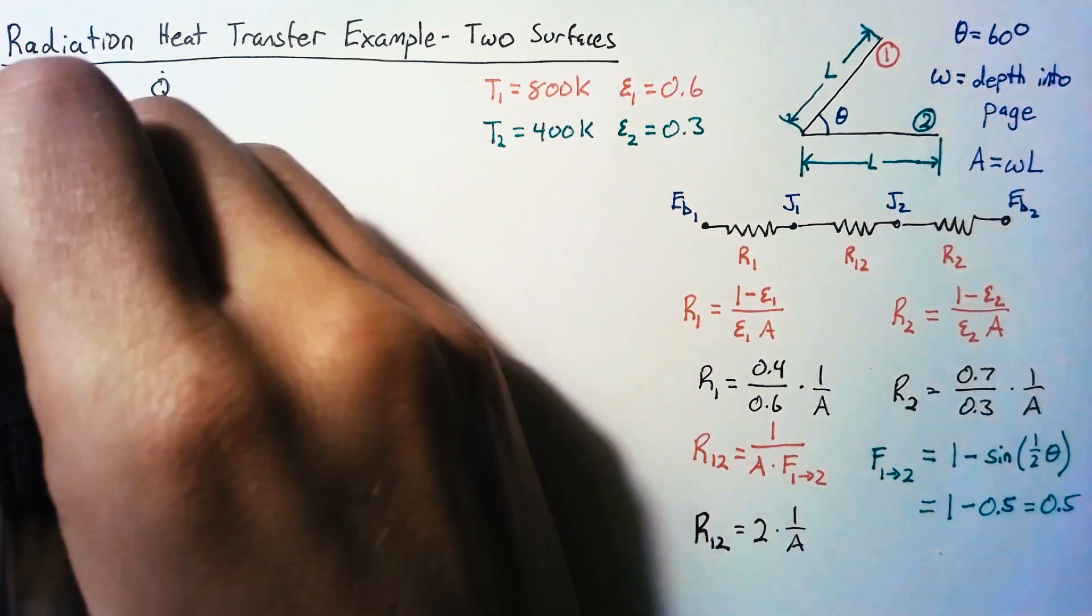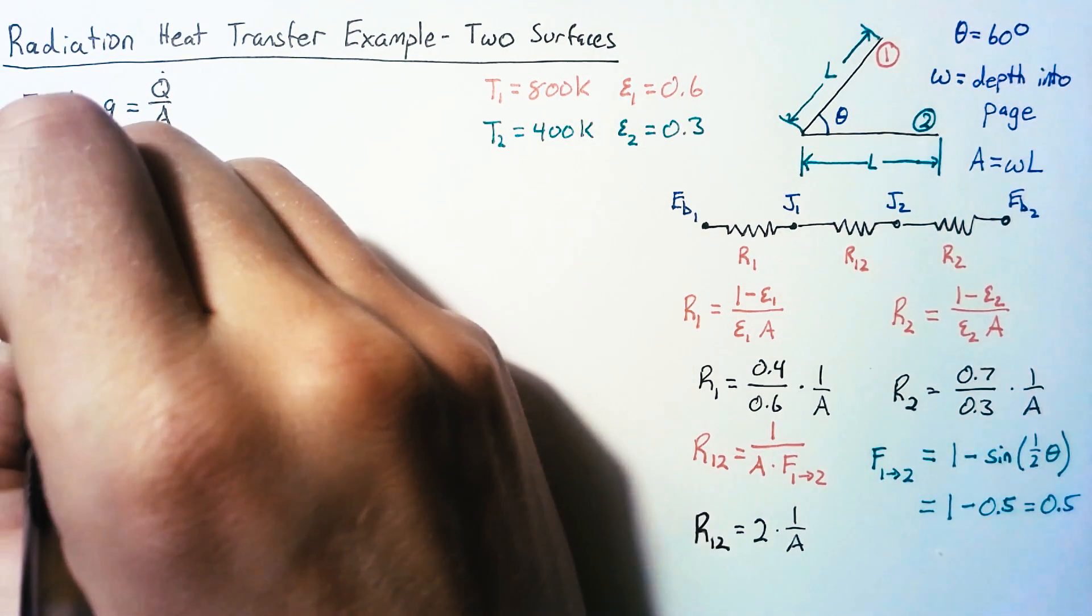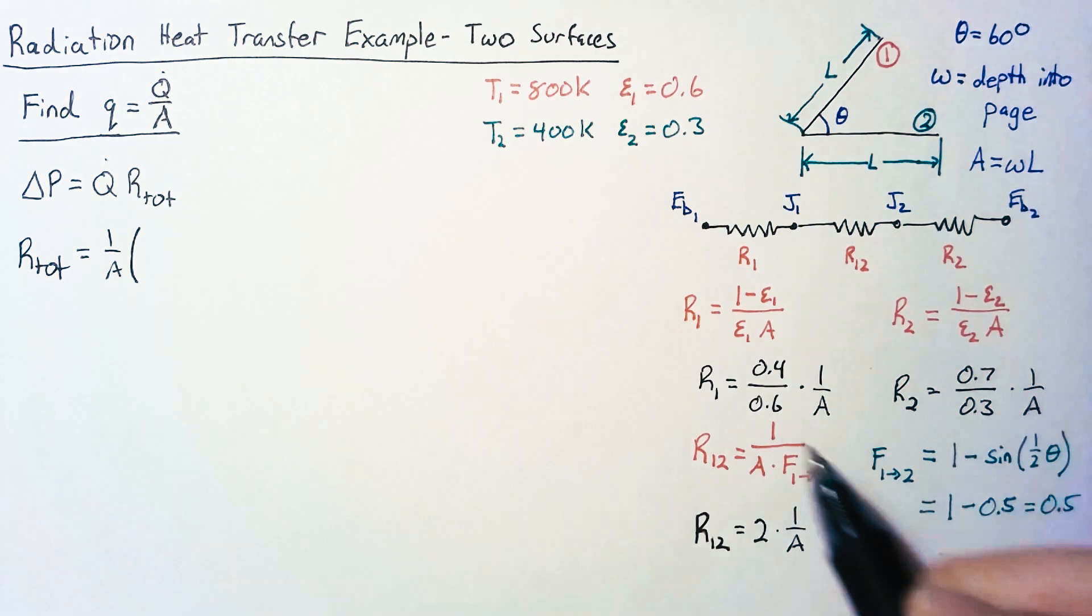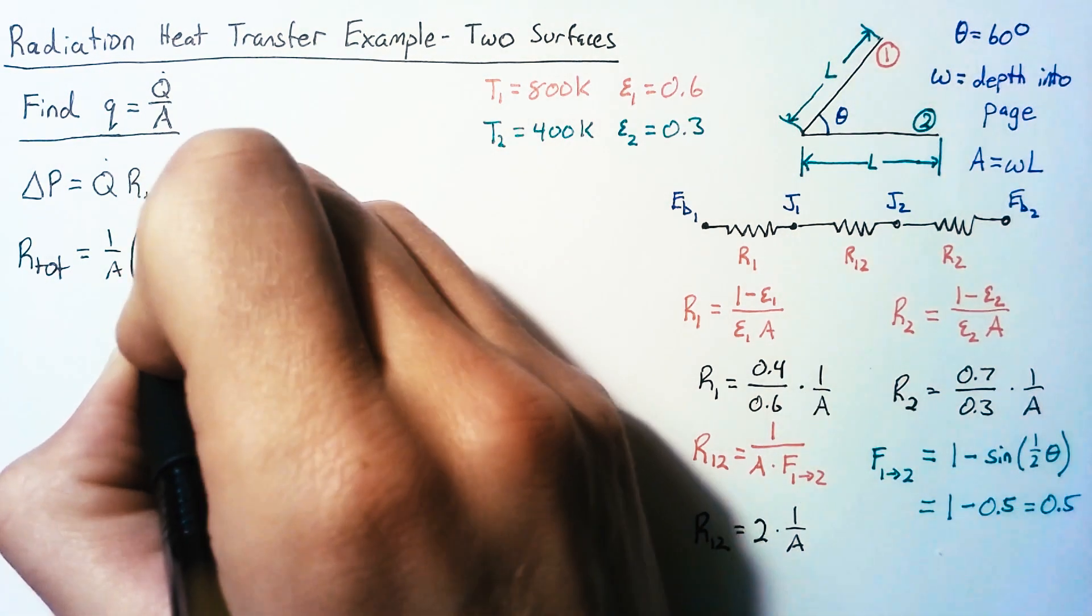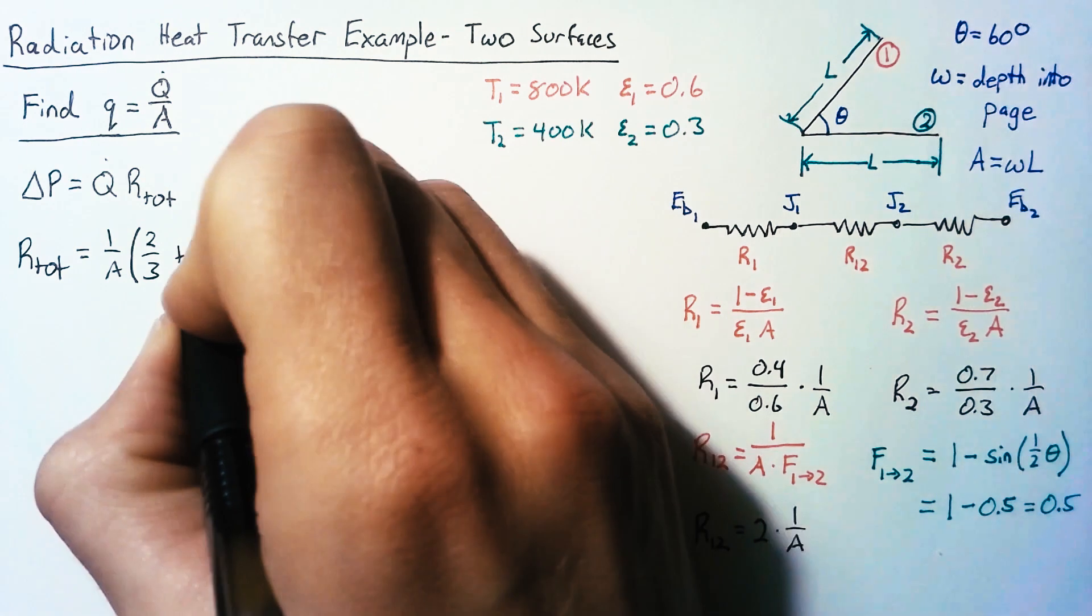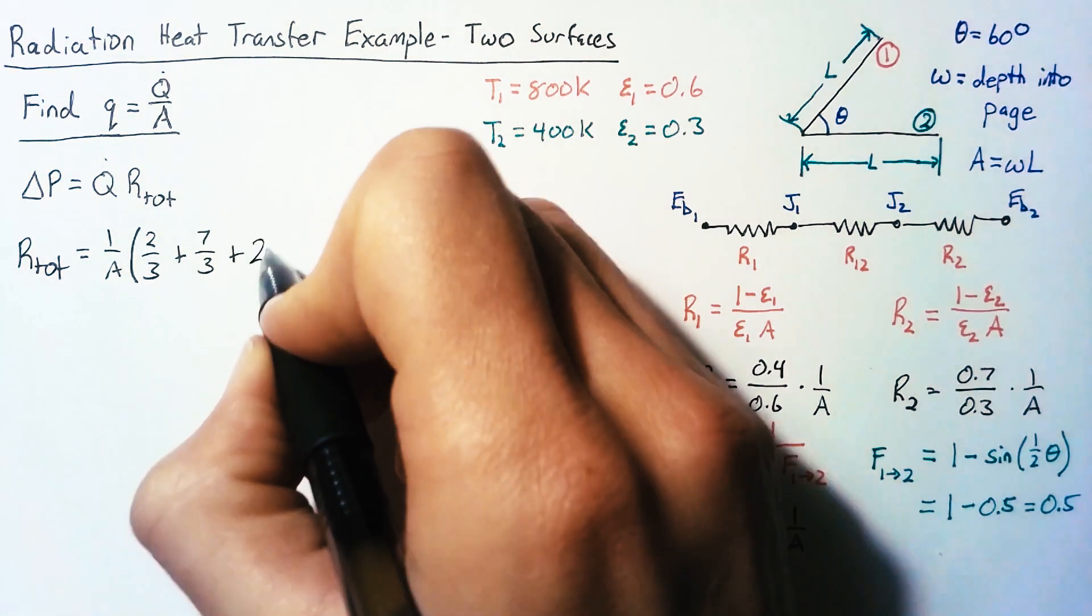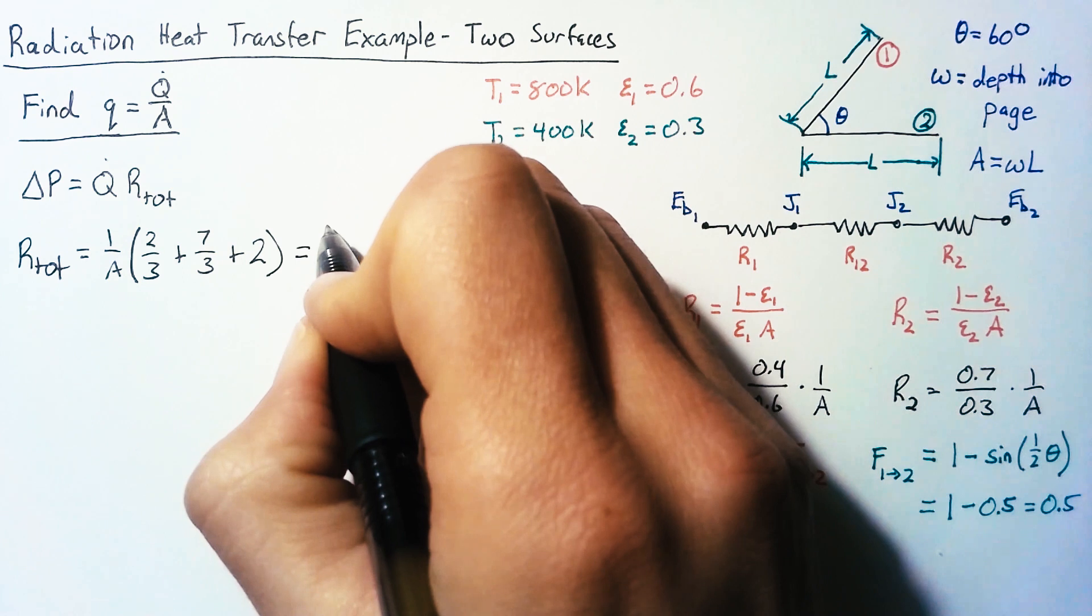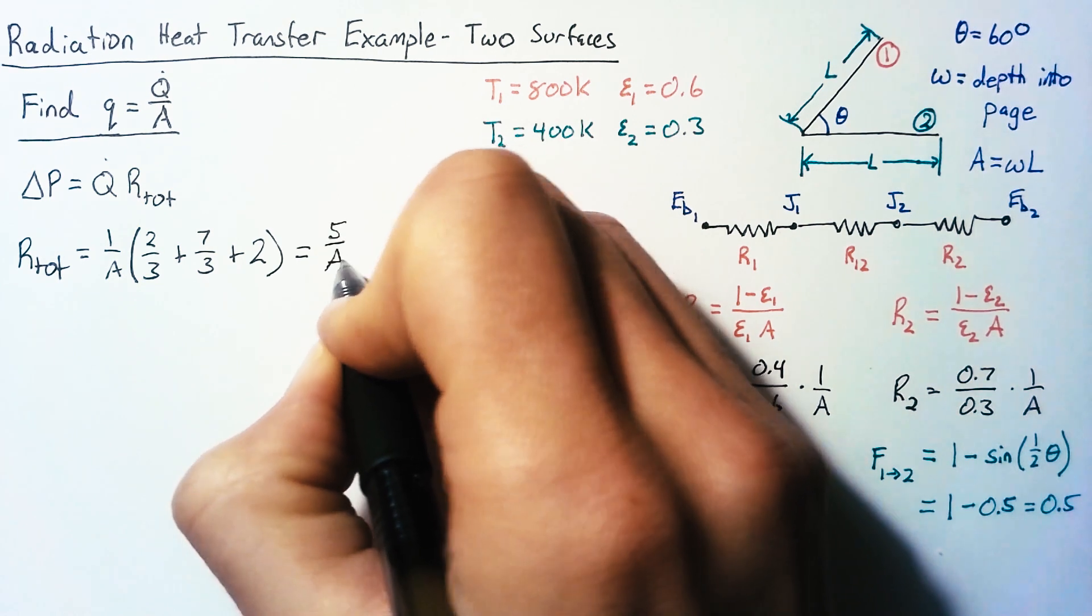So putting that all together, our total resistance is going to be equal to 1 over A multiplied by 0.4 over 0.6 or just 2 thirds plus 7 thirds plus 2. So simplifying that, we just end up with a total resistance of 5 divided by A.